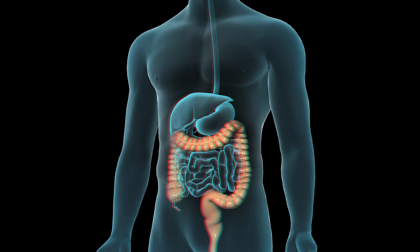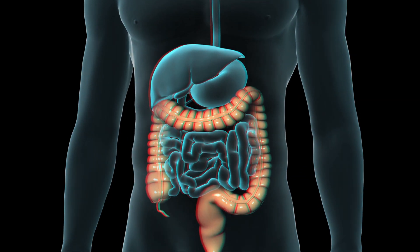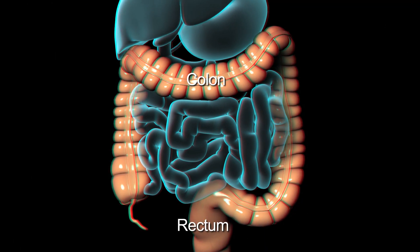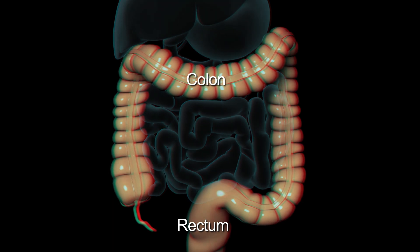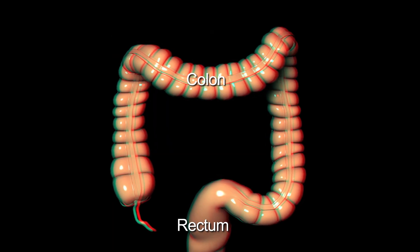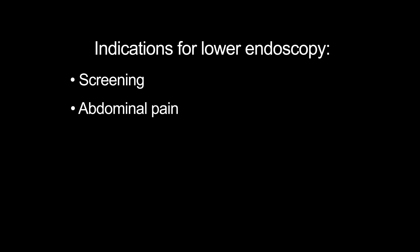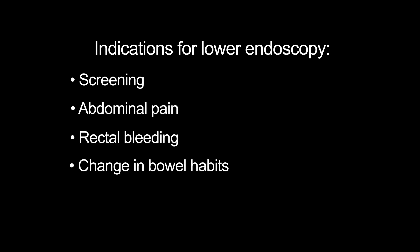A lower GI endoscopy, also called colonoscopy or sigmoidoscopy, allows your doctor to view the mucosal lining of your lower gastrointestinal tract. The procedure is used as a screening test in individuals with no symptoms, or to help diagnose unexplained abdominal pain, rectal bleeding, or a change in bowel habits.